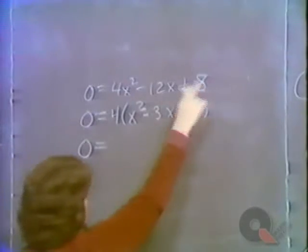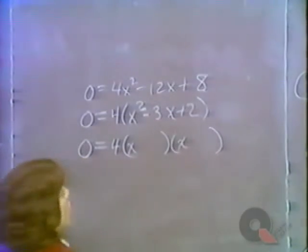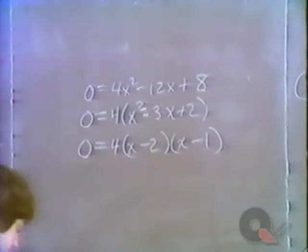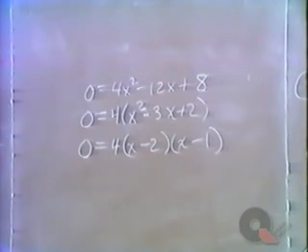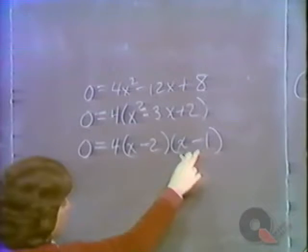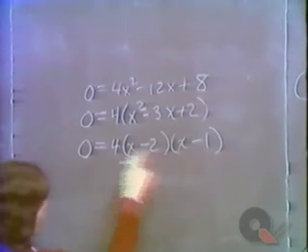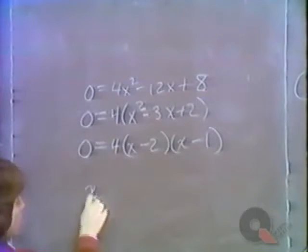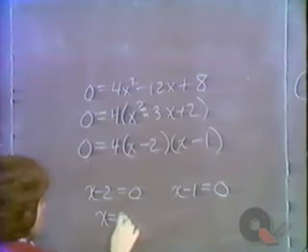Pulling out 4 makes the factoring much simpler. To factor x squared minus 3x plus 2, we want two numbers that multiply to plus 2 and add to minus 3: those are minus 2 and minus 1. So we have 4 times x minus 2 times x minus 1 equals zero. Since 4 can't equal zero, we can ignore it — or simply divide both sides by 4 — leaving x minus 2 equals 0 or x minus 1 equals 0.